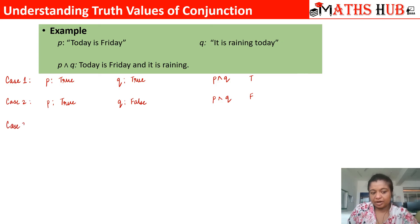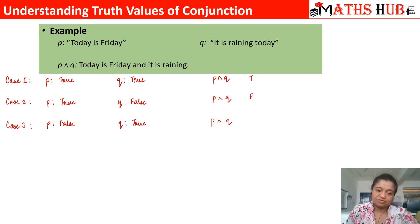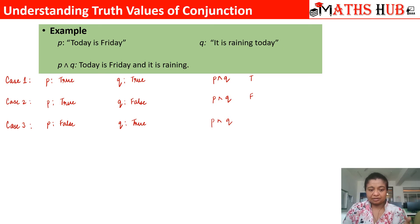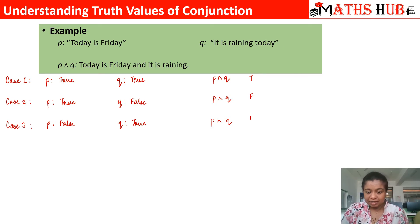Case 3: p is false and q is true. That means today is not Friday, but it is raining today. The resultant argument gives 'today is not Friday and it is raining,' but our original argument requires today to be Friday, so the result is false.